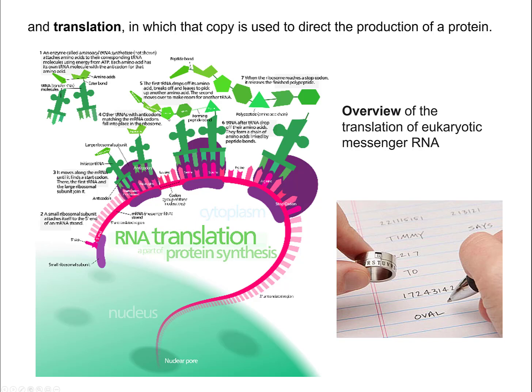Once the amino acid is taken off, it's called an uncharged transfer RNA. There are rules for this charging. The anticodon sequence will always have the corresponding correct amino acid. For right now, just think about the structure of the transfer RNA.